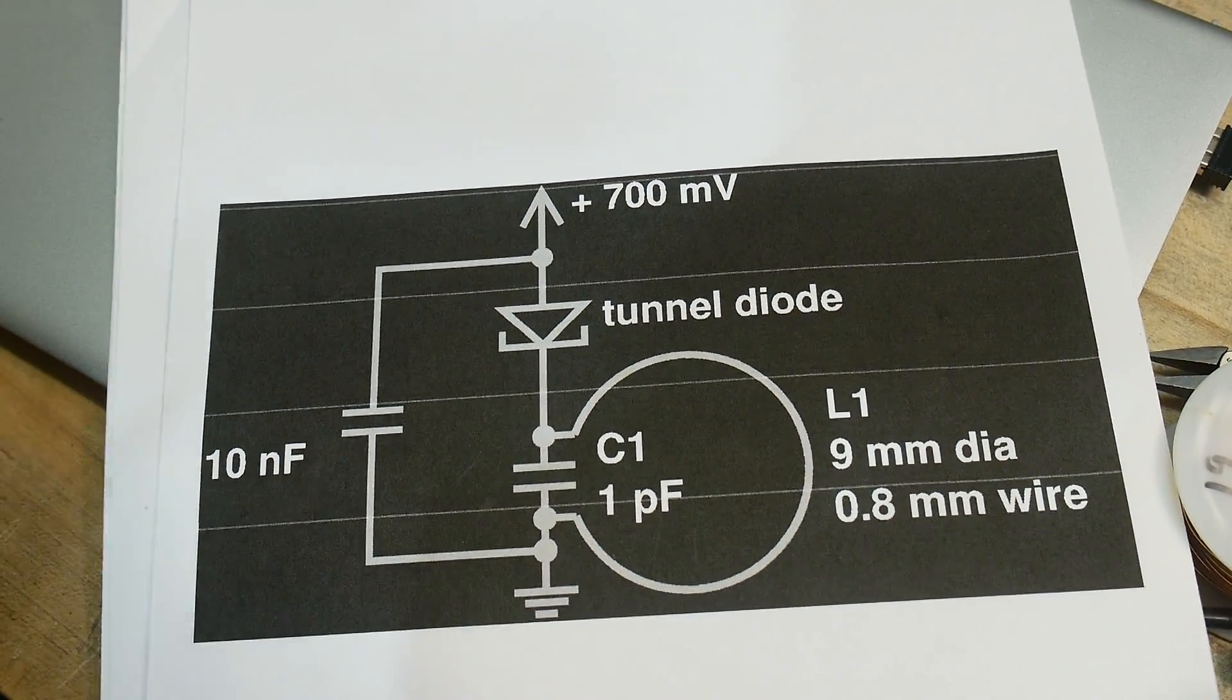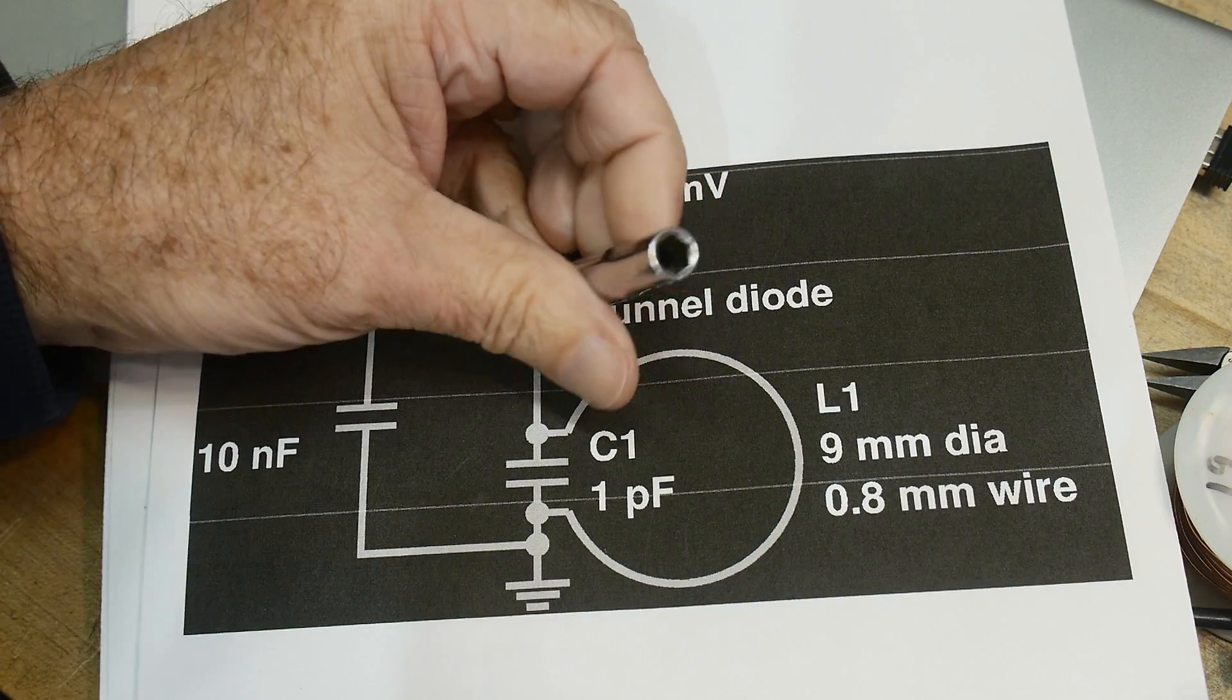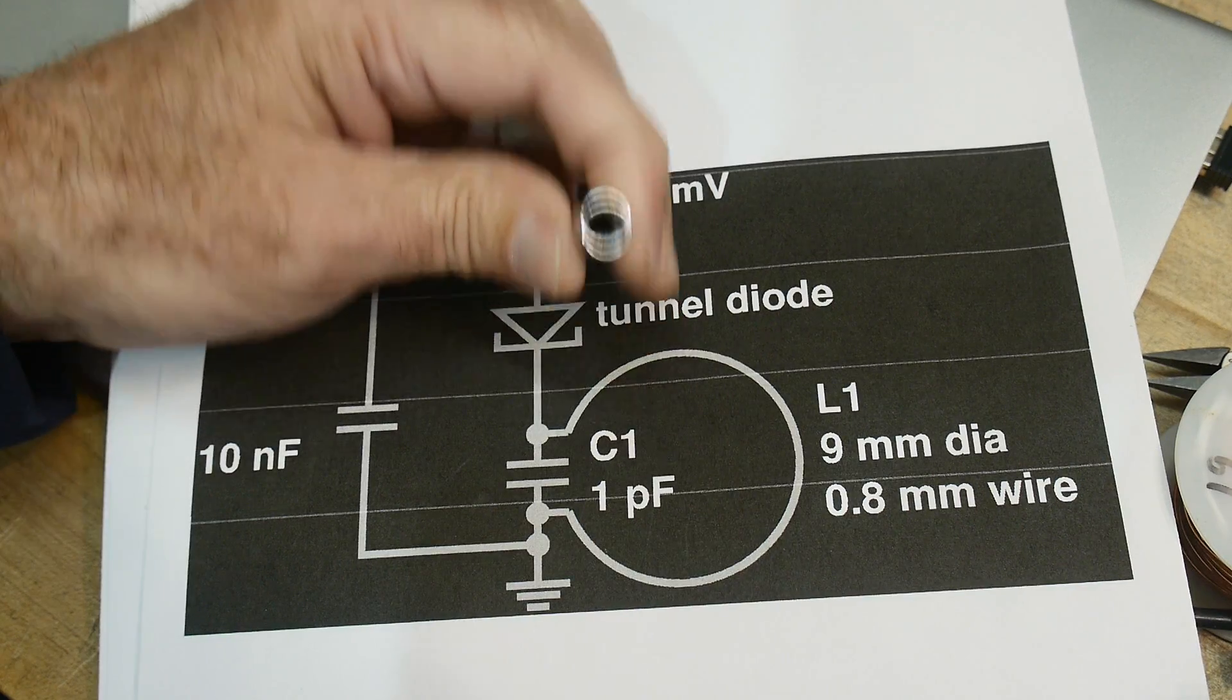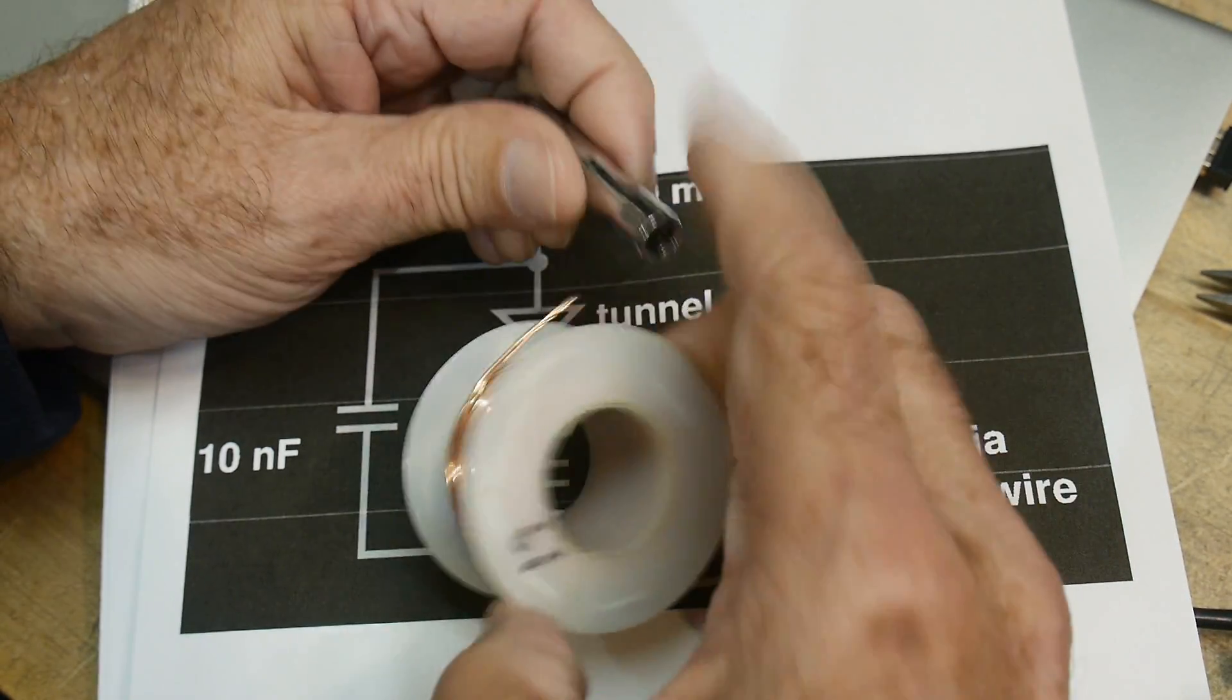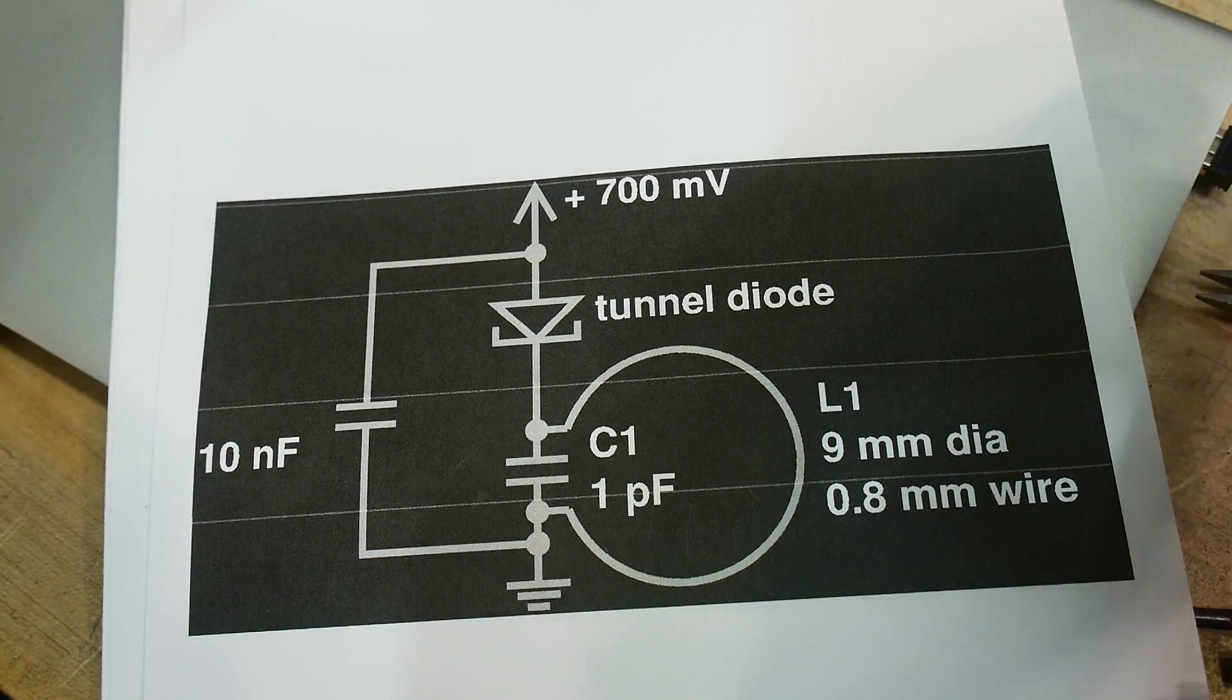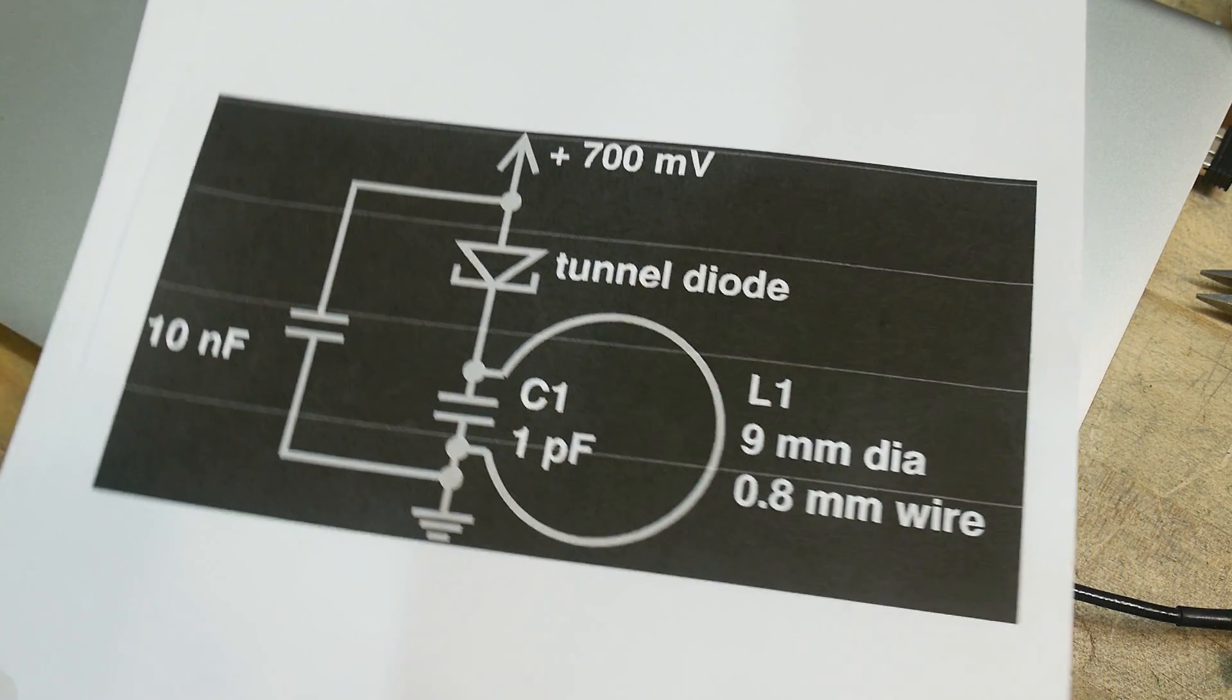All right. So I need a loop of nine millimeter wire. So I went in, I found a socket and the diameter of the socket is nine millimeters. And I can just wrap some wire around that and make my nine millimeter diameter piece of wire. All right.